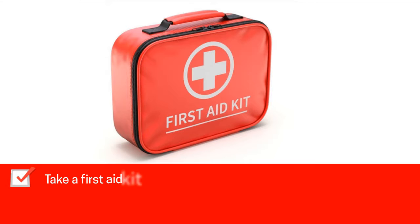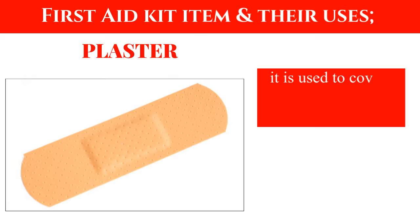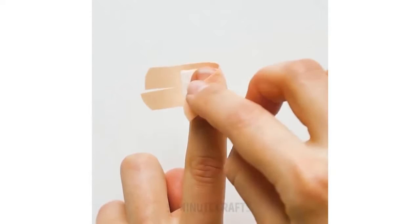Take a first aid kit box and display the following items, stating their uses. Plaster: it is used to cover small wounds and cuts. Now practice the use of plaster to cover wounds and cuts.